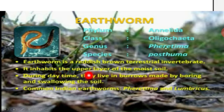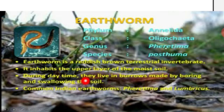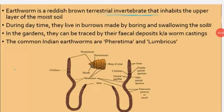Habits: Earthworms inhabit the upper layer of moist soil. During the daytime, they live in burrows made by burrowing and swallowing the soil. The presence of earthworms in gardens can be traced by worm castings. Worm castings are the excretory waste expelled from the body of the earthworm after it ingests soil and mud; these expelled wastes are called worm castings.